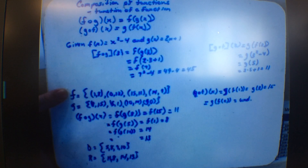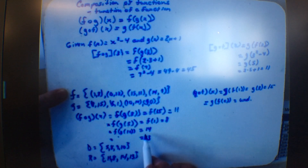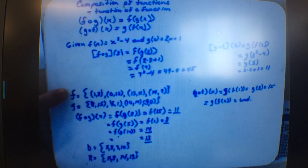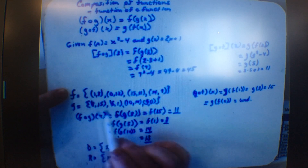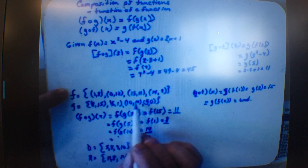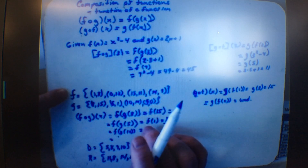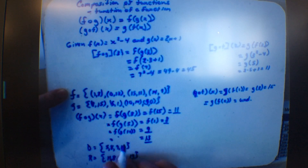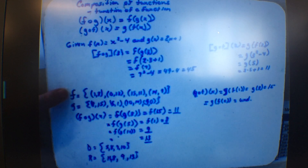Did everybody see that? Addy asks where the 14 in the range came from — let me check. f of g of 10: g of 10 is 14, and f of 14 is 9. So the range value there should be 9, not 14. My apologies.